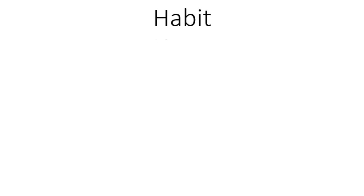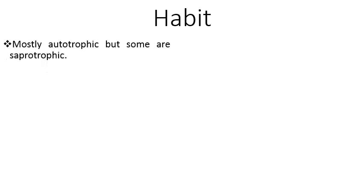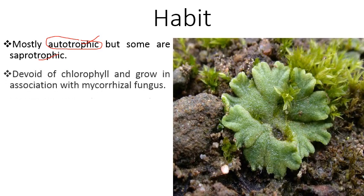Regarding habitat: bryophytes are small plants with no woody structure. Mostly they are autotrophic — they make their own food. However, some bryophytes are saprophytic, growing on decaying organic matter. These saprophytic bryophytes are devoid of chlorophyll and grow in association with mycorrhizal fungi, absorbing food hydrolyzed by fungal enzymes.